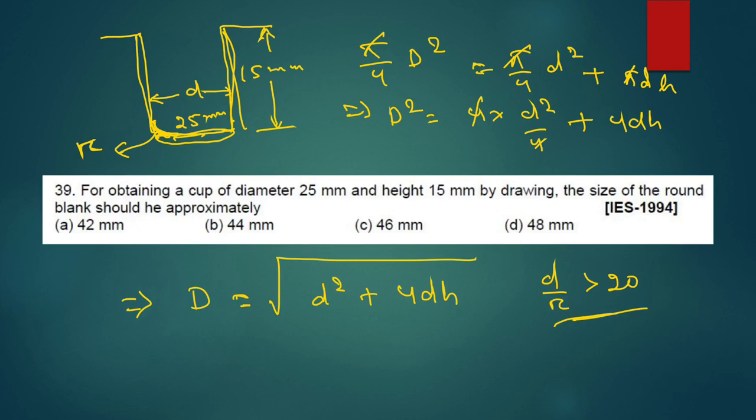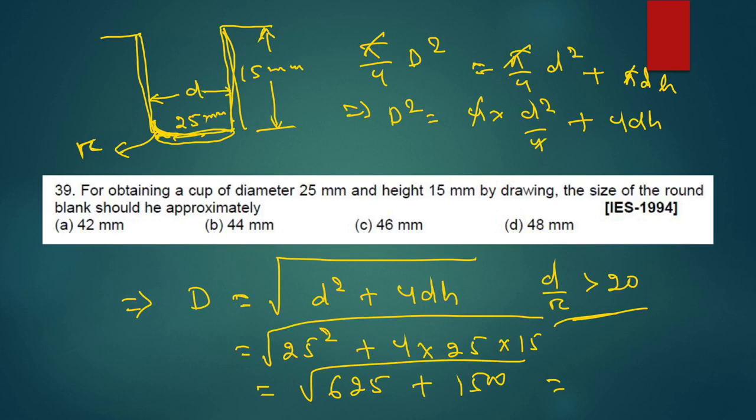Put the D square, it's 25 square plus 4, D 25, H is 15. It's 25 root over 25 plus 100 into 15, 1500. You will get 2125. You have to do the root over. If you square from the options, you will get A not possible, B not possible, C is answer. It's approximation method.